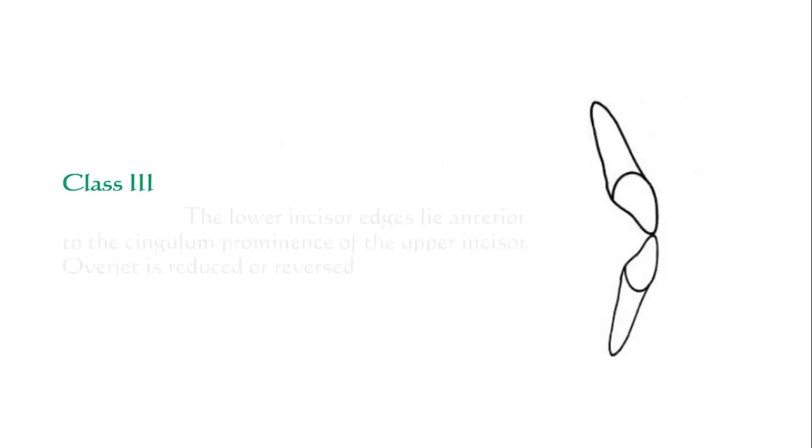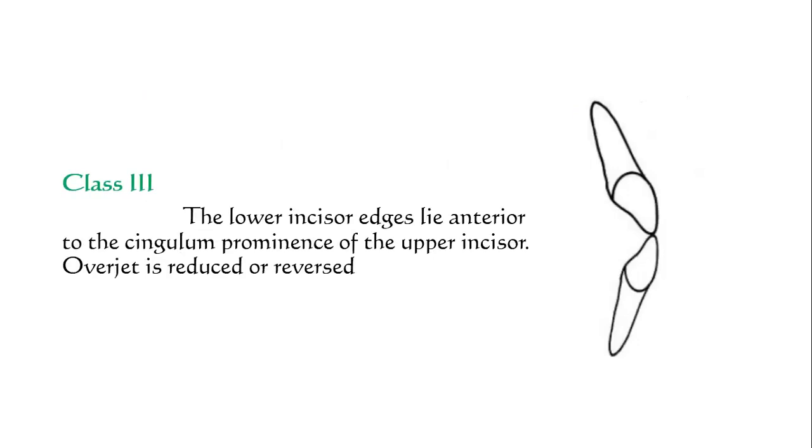In Class II Division I, the upper incisors are more proclined or of average inclination and there is an increased overjet. In Class II Division II, the upper incisors are retroclined and overjet is minimal but may be increased. In Class III, the lower incisor edges lie anterior to the cingulum prominence of the upper incisors, or there will be a reverse overjet.